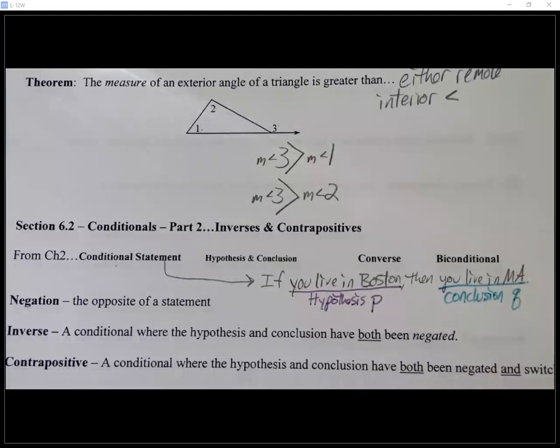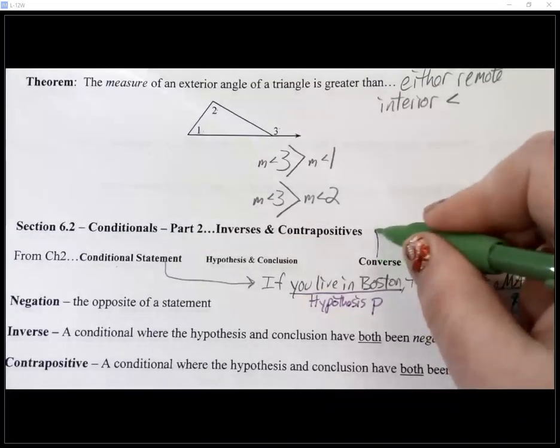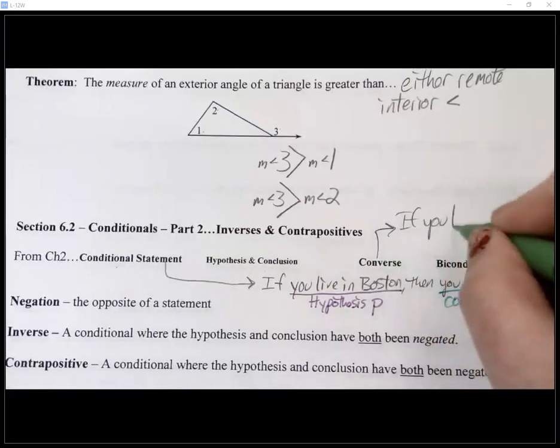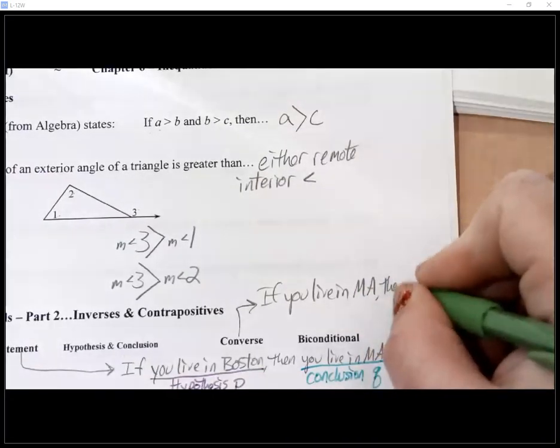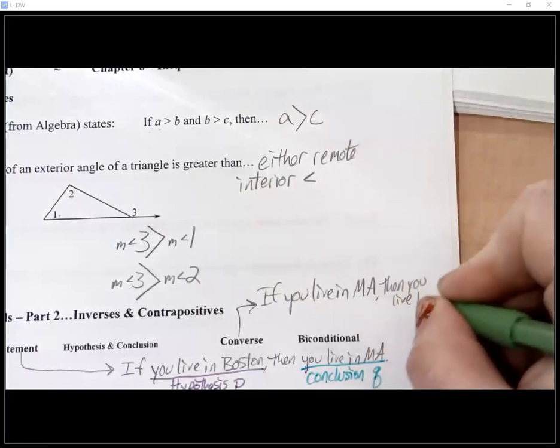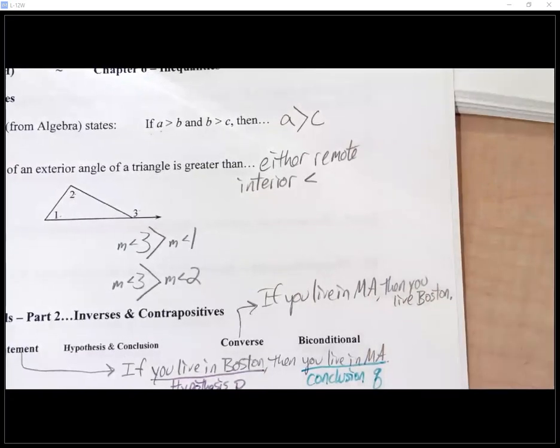Right, it's the chunk that comes after the word then. So in this case, it would be you live in Mass. So there is my conclusion. Which is represented by the letter Q. We're going to write it symbolically. All right. And then what was the deal with the converse? Exactly. You're going to swap the two. So my converse of this statement would read. See, I have nowhere to put it. I'll stick it right up here. If you live in Mass, then you live in Boston. Is that a true statement? No.